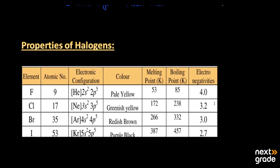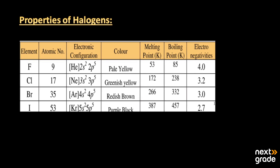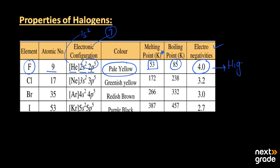Now looking at the properties of the halogens: for fluorine, its atomic number is 9, so it contains 9 electrons total. Its electronic configuration is 1s2 2s2 2p5, giving it 7 electrons in its valence shell. The color of fluorine is pale yellow, its melting point is 53 K, its boiling point is 85 K, and its electronegativity is 4.0 — the highest among all elements in the periodic table.